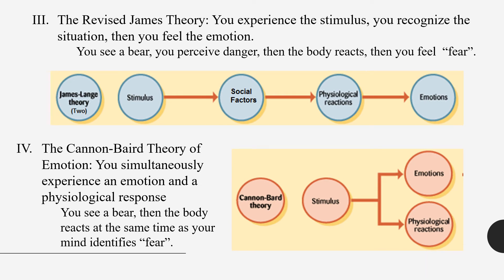This persisted for a decent period of time, but eventually people started poking holes in it. They argued that if something happens and your body reacts, your body might react in a way that produces one emotion one time and a completely different emotion another time. Going back to the bear example: maybe we don't see a bear, our heart races, and we feel fear. Instead, we see a bear, our heart races, everything's going crazy, and then we recognize the social factors at play. Maybe this bear is in the woods, so we're scared. Or maybe this bear is at the zoo, so we're happy or excited — two very different emotions in pretty much the same situation where our body is reacting in a similar way.